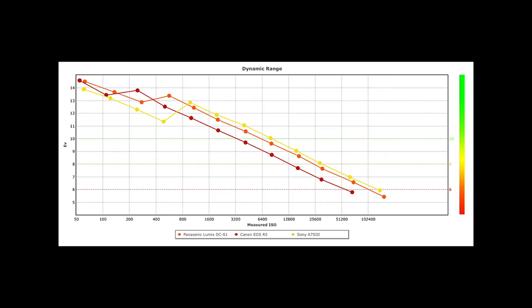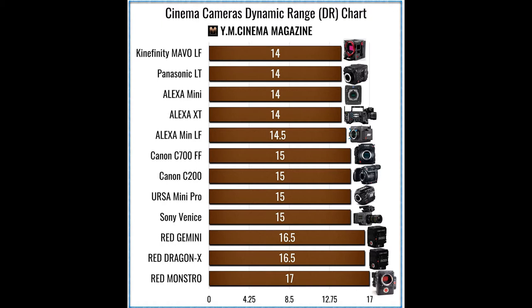With cinema cameras you'll probably get 14 stops, and sometimes up to 15 on certain really expensive cameras. But we're using mirrorless and prosumer or entry-level cameras — so how can we achieve that similar look to the really high-end, expensive cinema camera that often has a very high dynamic range?